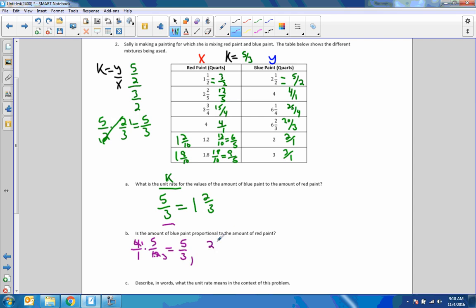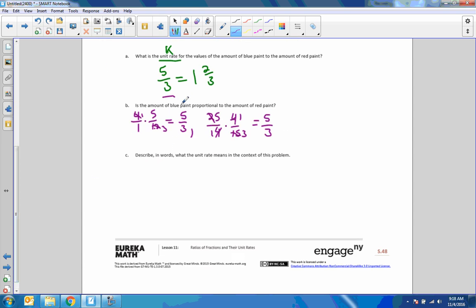4 goes into 4 once, 5 goes into 15, 3 times, 5 goes into 25, 5 times, 5 times 1 is 5, 1 times 3 is 3. If we continue doing that for all of them, we would see that 5 thirds will be the result for each one, and I'm not going to take time to do that. That's how you would answer that question. Is the amount of blue paint proportional? Yes, because we get the same.